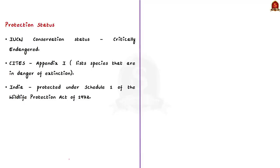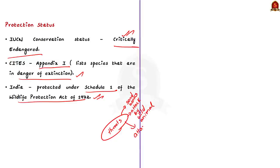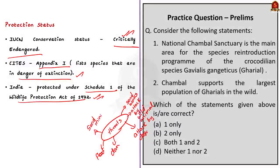According to the IUCN protection status, gharials are critically endangered and have been identified as the most critically endangered crocodilian species in the world. The gharial is listed in CITES Appendix 1, which lists species in danger of extinction. In India, it is protected under Schedule 1 of the Wildlife Protection Act 1972. As for threats: gharials bask in the sun on sand banks, making them vulnerable to attacks by wild animals. The eggs of gharials are also eaten by feral dogs and humans. Since gharials prefer clear freshwater, river pollution is affecting their habitat. Other threats include dam construction, large-scale fishing operations, floods, illegal sand mining, and poaching. With this, let us conclude the news article discussion session.